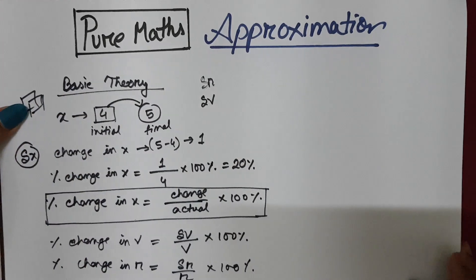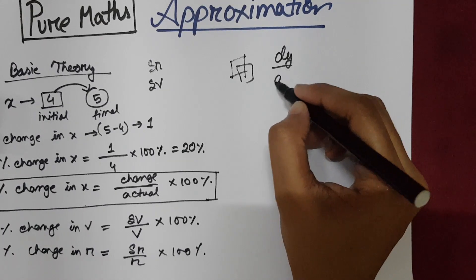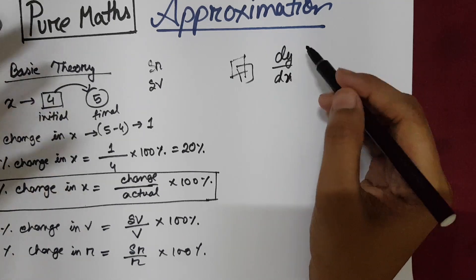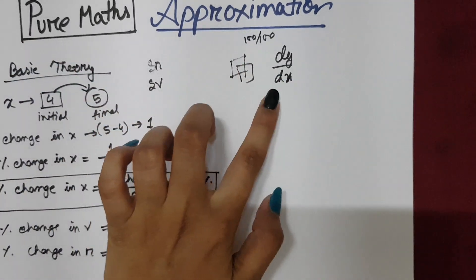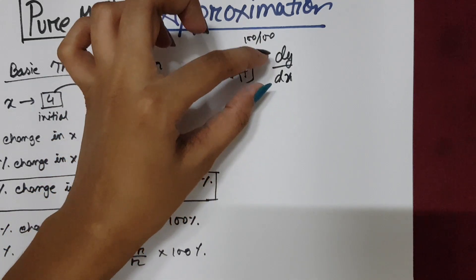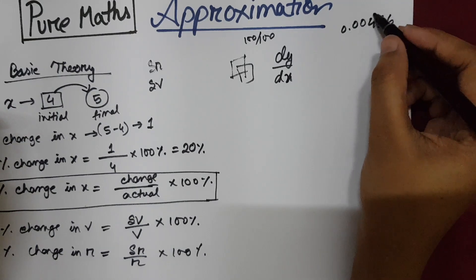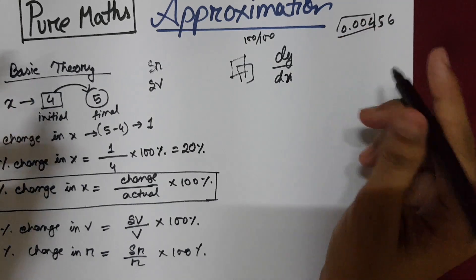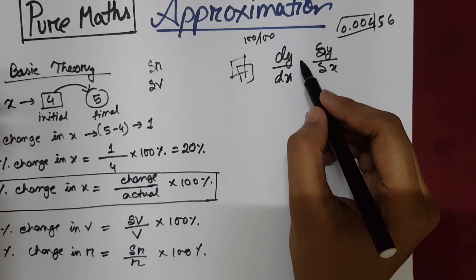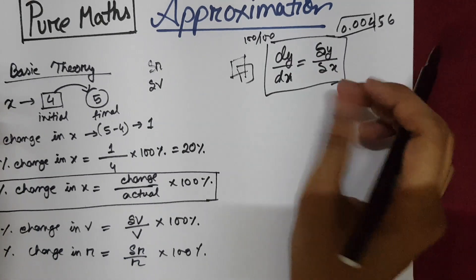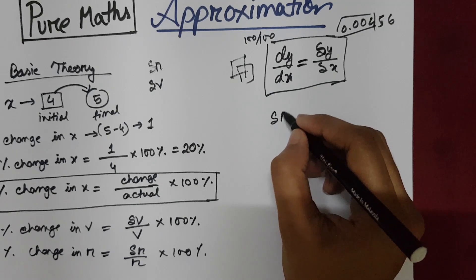There is another important thing: when I write dy by dx — if the changes in the values of y and x are large, like 100 or 1000, we use the term differentiation and the letter d. But if the values are very small, for example 0.004 or approximate values, then we write del y by del x. Both represent the change, and that's why we can put an equal sign between them.